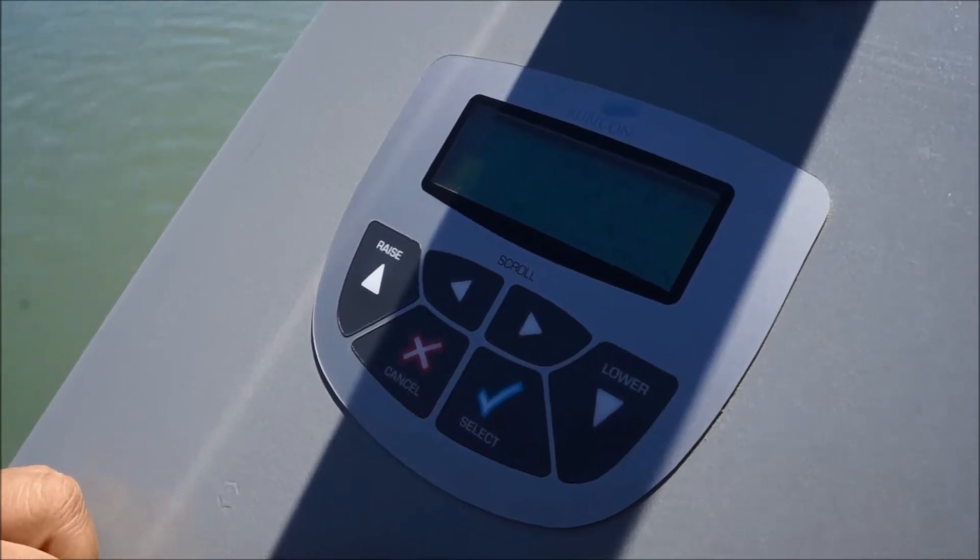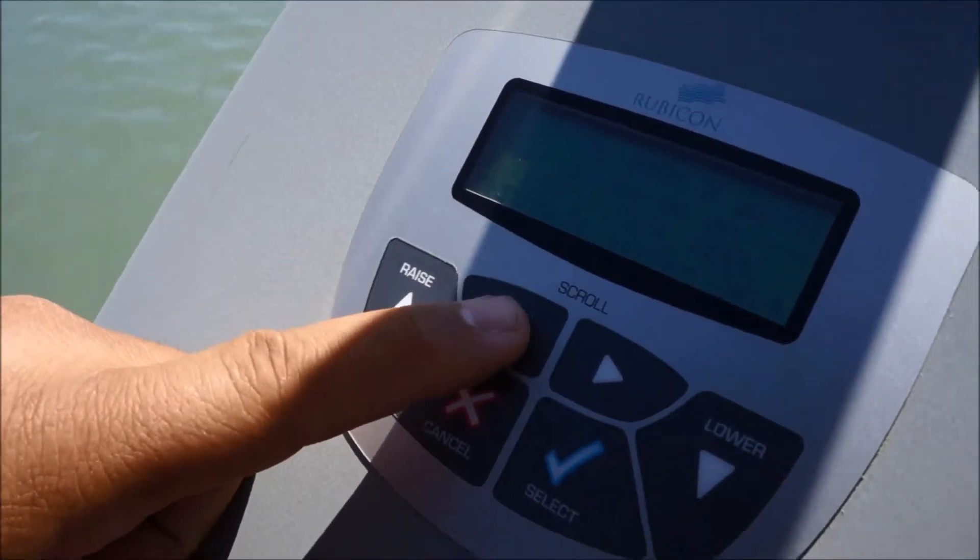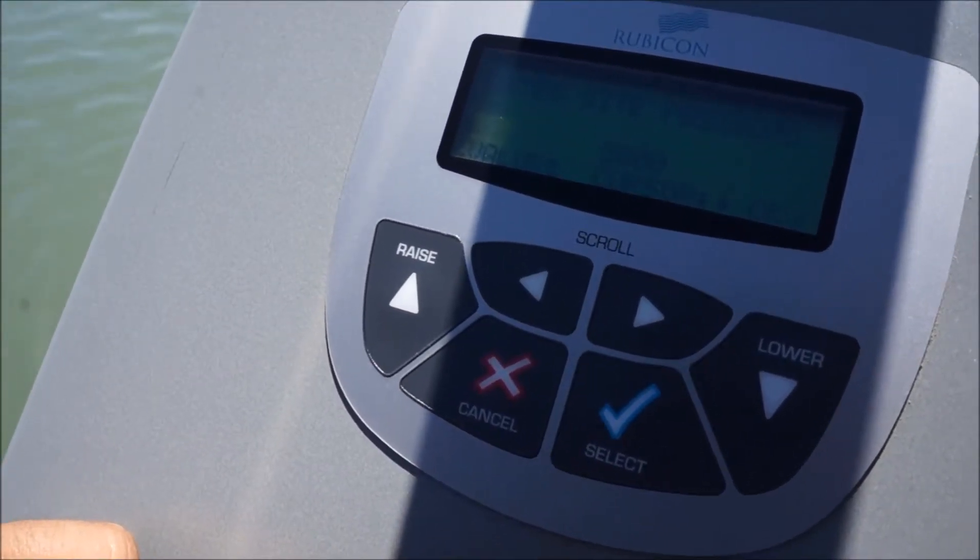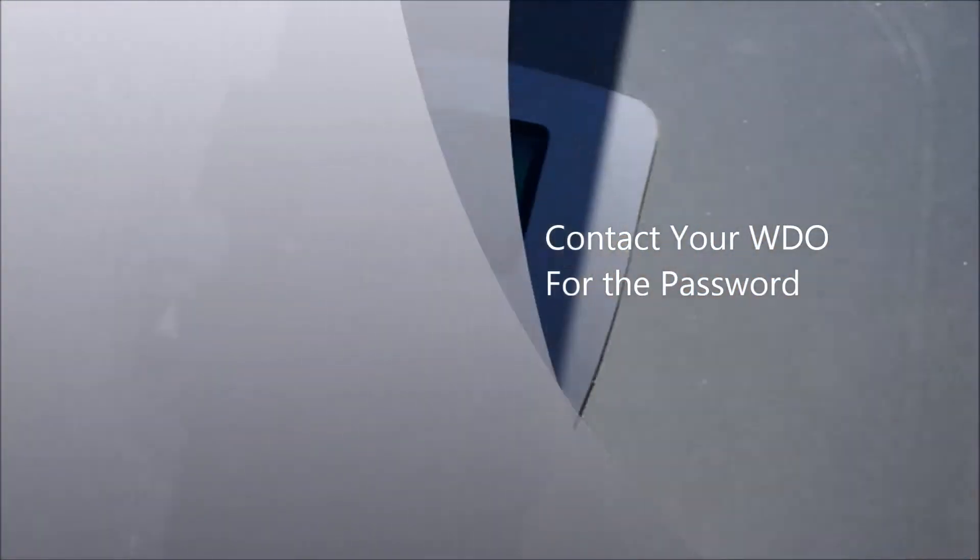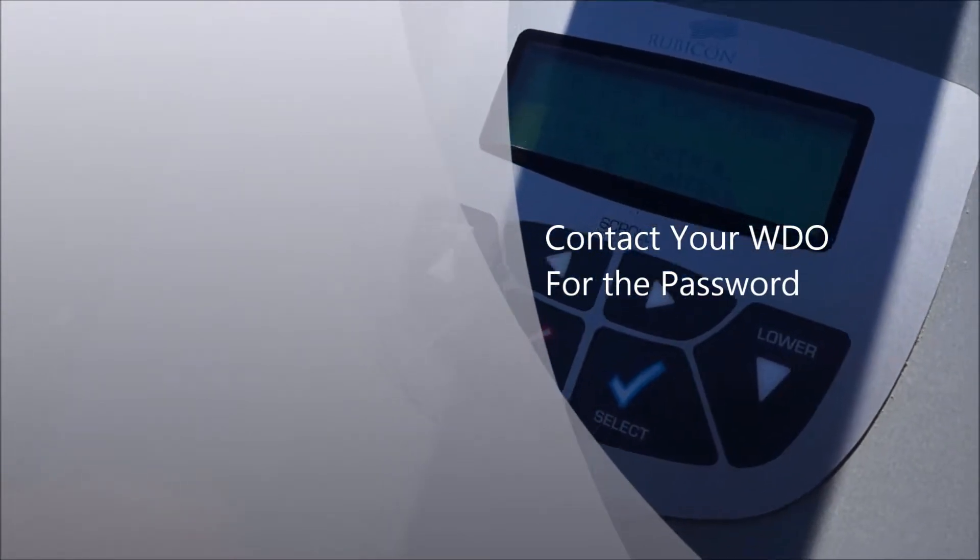So for gate position, we're going to start by hitting the left key, put in the password supplied by your ditch tender. And then once you put in your password and hit select, you'll have these choices.